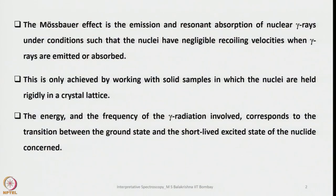Mössbauer effect is the emission and resonant absorption of nuclear gamma rays under conditions such that the nuclei have negligible recoiling velocities when gamma rays are emitted or absorbed. This is only achieved by working with solid samples in which the nuclei are held rigidly in a crystal lattice. The energy and frequency of the gamma radiation corresponds to the transition between the ground state and the short-lived excited state of the nuclide concerned.